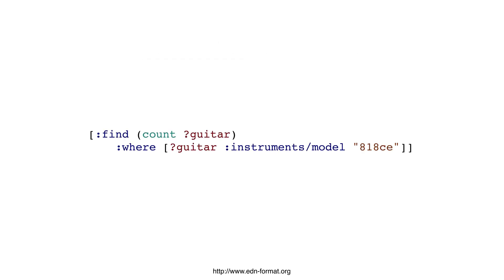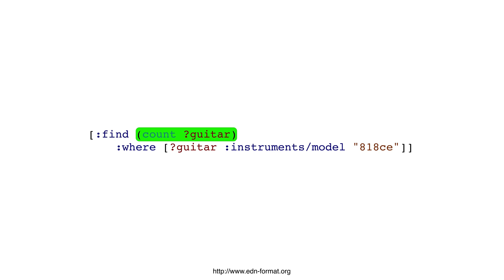This is EDN that you may use to interact with Datomic Cloud. Guitar is a symbol, and Datomic interprets this as a variable due to the question mark preceding it. This would perhaps be used to query a database for how many of the 818CE model exists in our inventory.